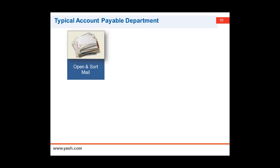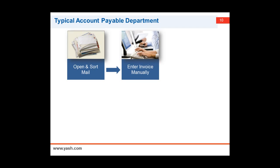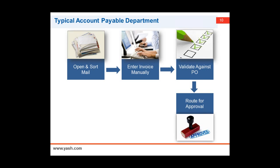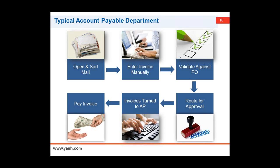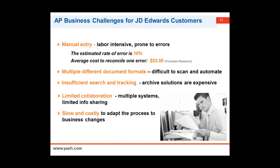I'll briefly run you through a typical account payable department for a JDE application. This is how a typical AP department works: you open and sort your mail, enter invoices manually, validate against the PO, route to workflow for approvals, turn invoices to accounts payable, and finally pay invoices. A lot of manual entry happens wherein, as research shows, the estimated rate of error is 10%. Considering thousands of documents being managed in a month, you can understand how much money is spent reconciling these errors.